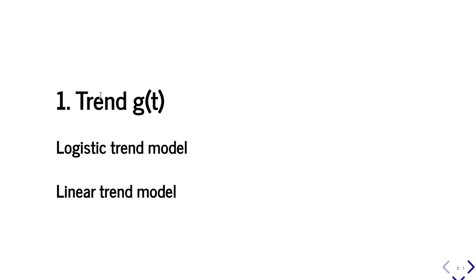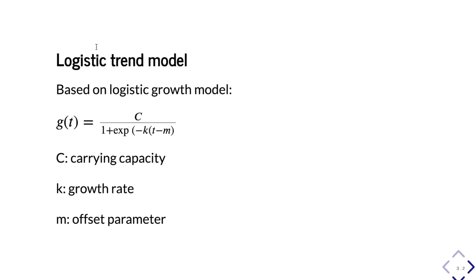First of all, the trend model can be modeled as a logistic trend model or a linear trend model. The logistic trend model is based on the logistic growth model — the basic function where C is the carrying capacity, K is the growth rate, and M is the offset parameter.